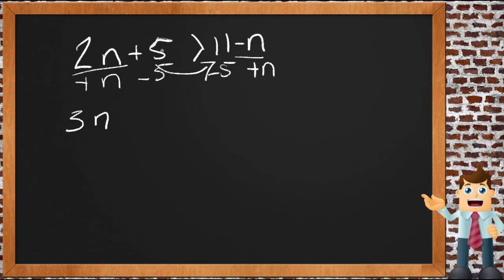And here we have 5 minus 5, that's 0. And then we have greater than 11 minus 5, that's 6. And negative n plus n, that's 0. So now we have 3n is greater than 6. Divide both sides by 3. Our 3's will cancel over here and we'll get n is greater than 2.